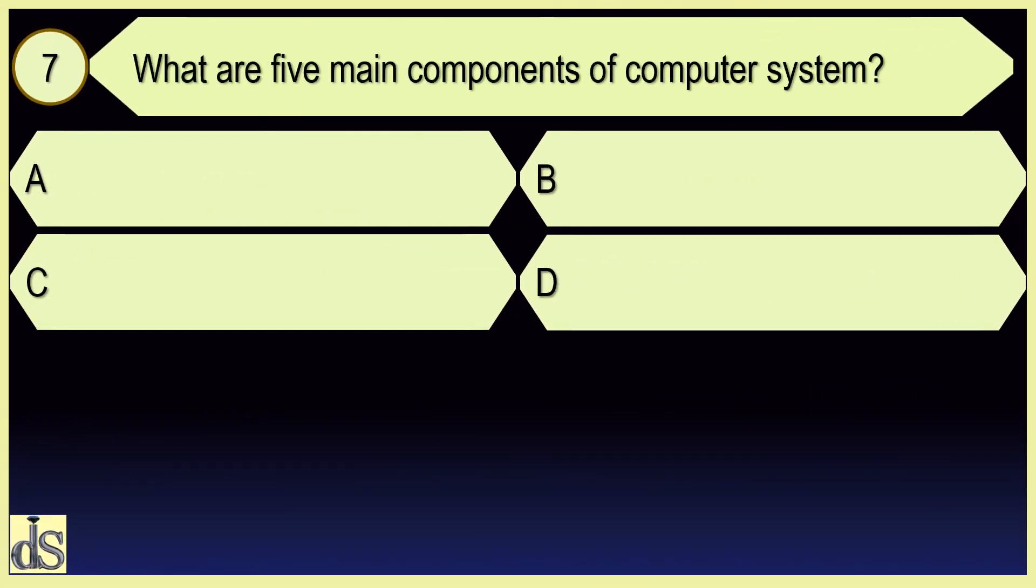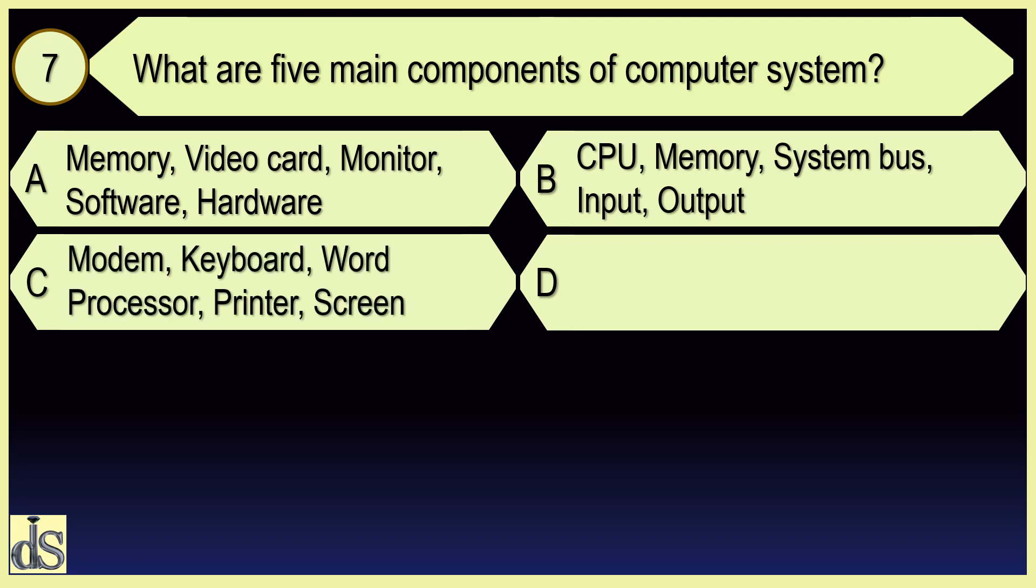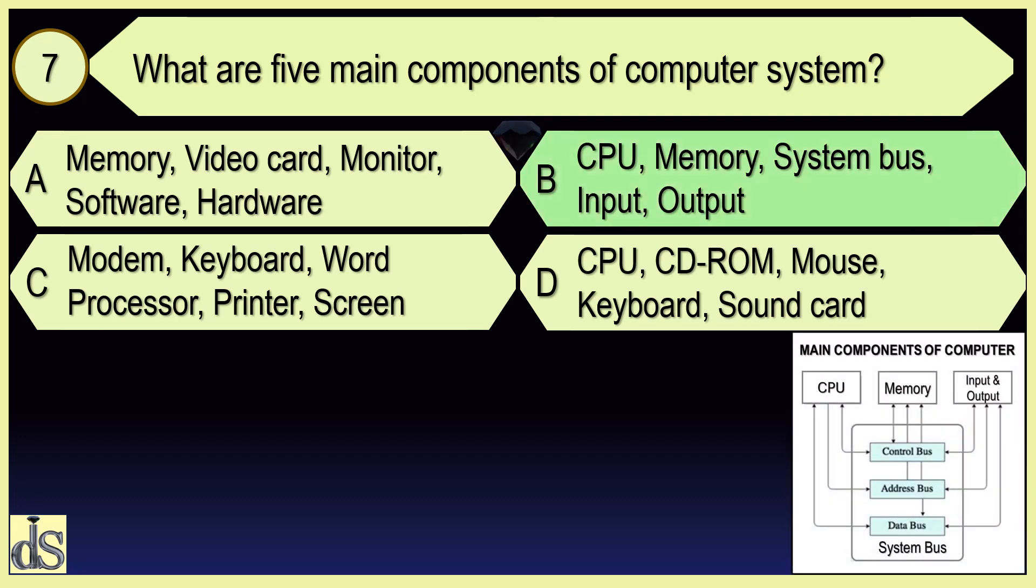What are the five main components of computer system? CPU, Memory, System Bus, Input, Output.